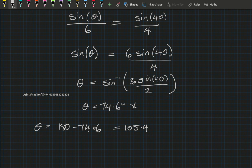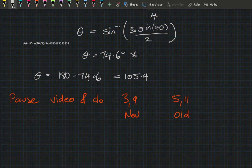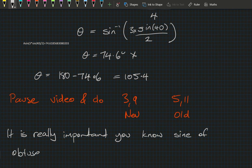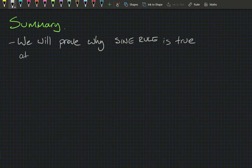Pause the video and do questions 3 and 9 in the new book and questions 5 and 11 in the old book. Before you go, remember it's really important to understand how to work with sines of obtuse angles — you need to make clear decisions. In the summary: while we worked with the Sine Rule today, we'll try to prove it at the end of this block, and GeoGebra should have given you some hints.